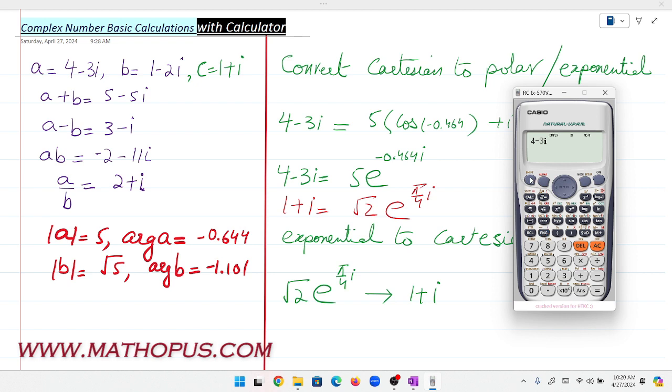Press Shift, then RCL to store this value 4-3i in memory. I'm choosing memory A. Now this value is stored in fixed memory A.